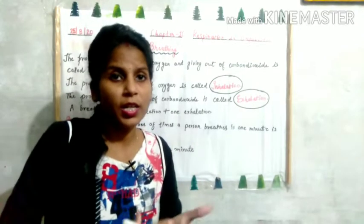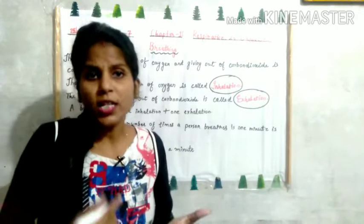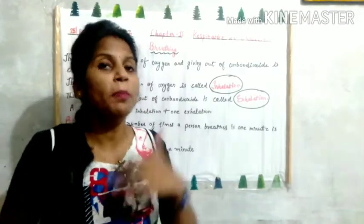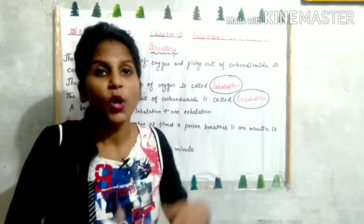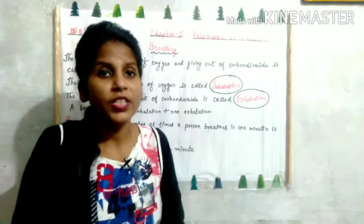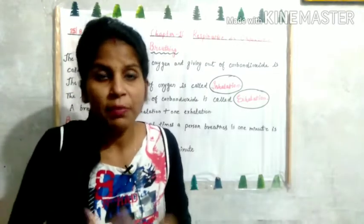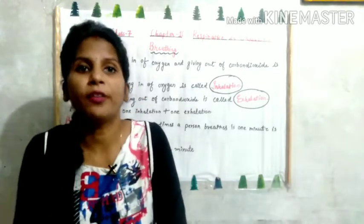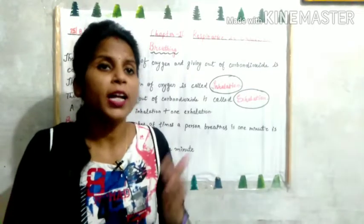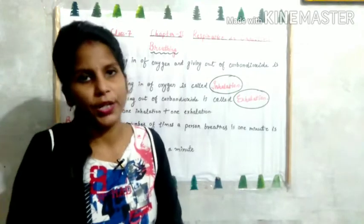Children breathe 20 to 30 times per minute. However, for adults, sometimes our breathing rate increases — when we exercise or run. When we do hard work, our breathing rate can increase up to 25 times per minute. Different organisms have different breathing rates.